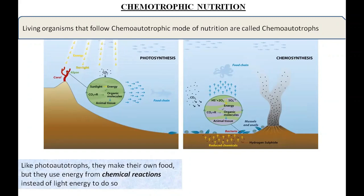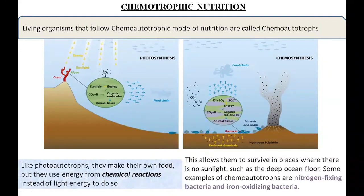Chemosynthesis is a process by which organisms such as certain bacteria use chemical energy to produce carbohydrates. They are capable of utilizing inorganic molecules such as iron, sulfur, hydrogen sulfide, ammonium, and magnesium, and are able to synthesize organic compounds from carbon dioxide. This allows them to survive in places where there is no sunlight, such as the deep ocean floor.